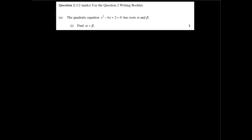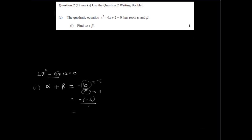Moving on to question 2, part A of the 2011 two-unit paper. We're given a quadratic equation x squared minus 6x plus 2, which equals 0. We're told that this has two roots, alpha and beta. Part A is asking us to find the sum of the roots, alpha plus beta. The sum of the roots is given by minus b on a. Here b is the coefficient of x, which is negative 6, and a is the coefficient of x squared, which is 1. So the answer is minus negative 6 over 1, which is positive 6.